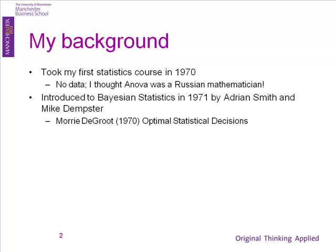It was introduced to me by Adrian Smith — he's the guy currently dealing with impact measures for universities — and Mike Dempster, who's done a lot of work on financial economics. But most of all, the book by Morrie de Groot. Nobody reading it today will realise what it was like, but it changed everybody's thinking in the 70s, because it laid out the whole of statistics and decision theory in a complete framework that a mathematician could understand and explain in plain English.